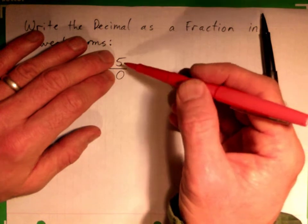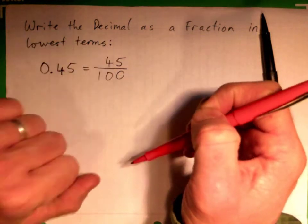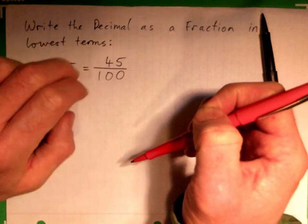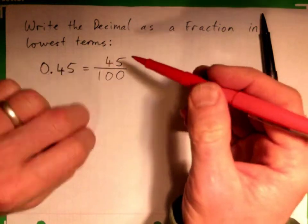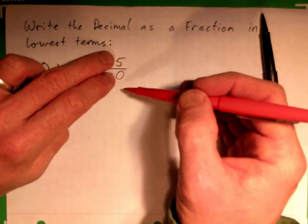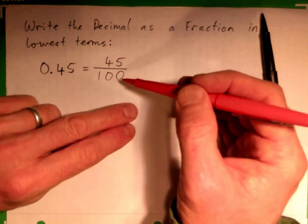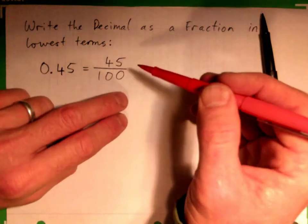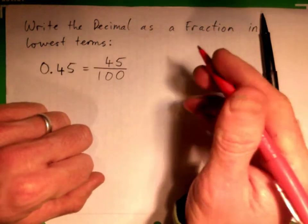So you might think multiples of what? 5. Yeah, not 10, but 5. 5 will go into both of them. 10 will not go into 45. 10 will go into 100, but it won't go into 45. But 5 will go into both, right?